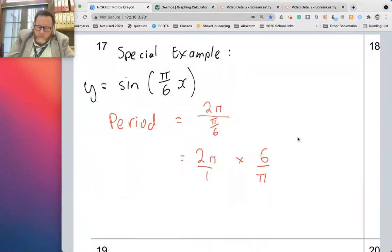So I'm going to be cancelling out the π's here, and I end up with a value of 12. So the period is a whole number instead of a radian measure with π in it. That's still okay. It's still a radian input, but now the period is over a length of 12.